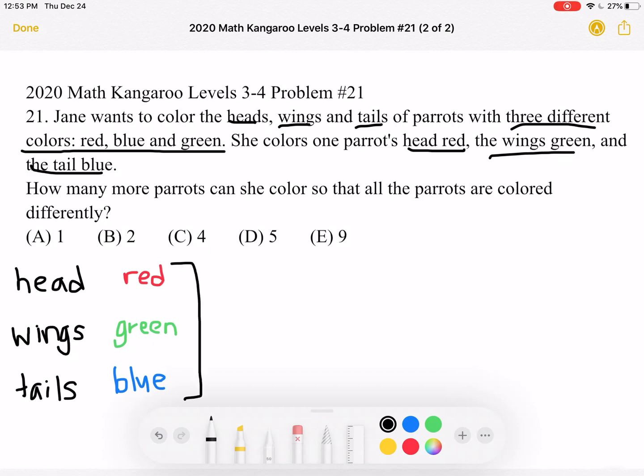We're going to do a row with the head, a row with the wings, and a row with the tails. And in this case, the first parrot we have has a red head, green wings, and blue tail.